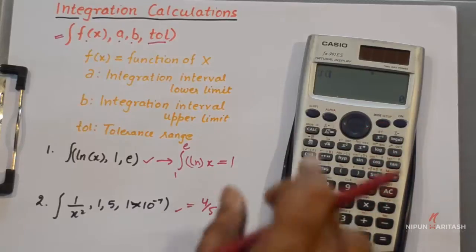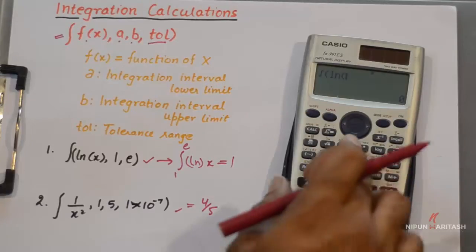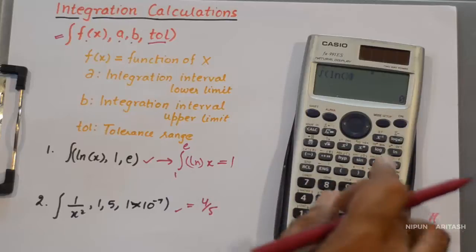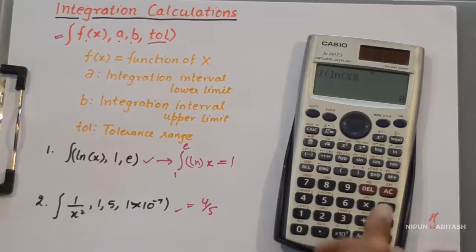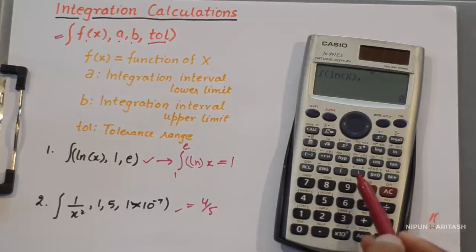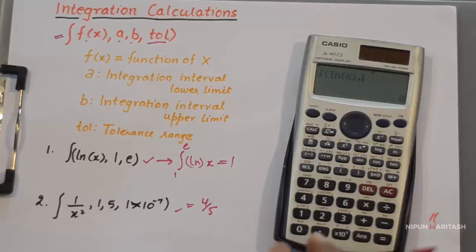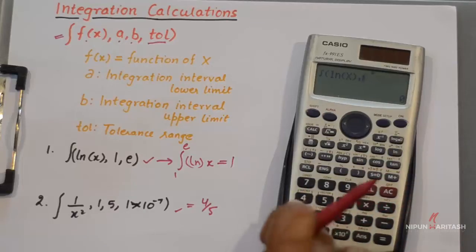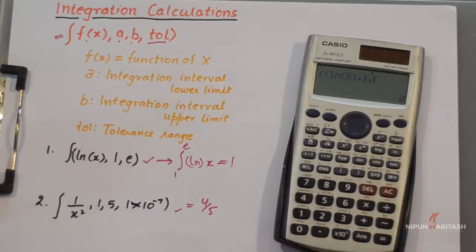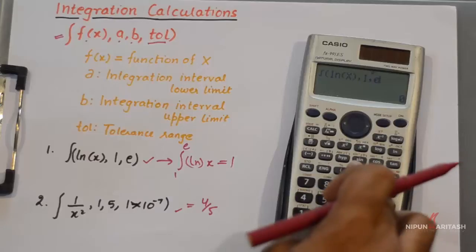If you press integral button here it will prompt you to enter the function first. We can enter the function as usual and then put a comma. For comma you need to use this button whose alternate function by shift is comma. Then enter the lower limit which is 1, then put a comma again, then put the higher limit which is E, and then close the brackets.